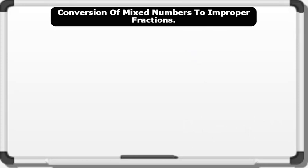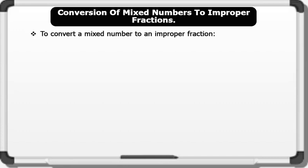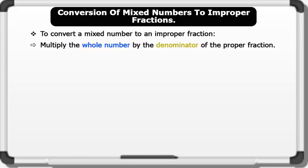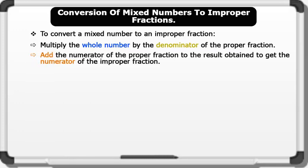Conversion of mixed numbers to improper fractions. To convert a mixed fraction to an improper fraction, we multiply the whole number by the denominator of the proper fraction. Then we add the numerator of the proper fraction to the result obtained to get the numerator of the improper fraction. The denominator remains the same. Let's see an example.